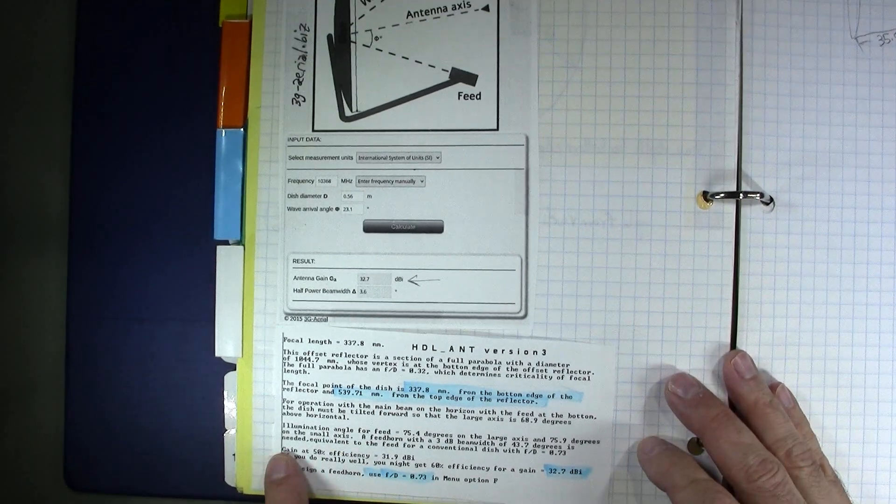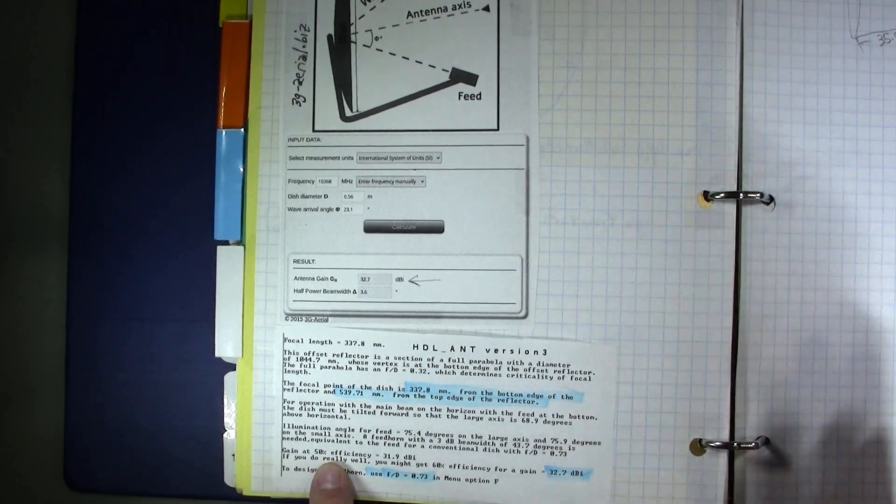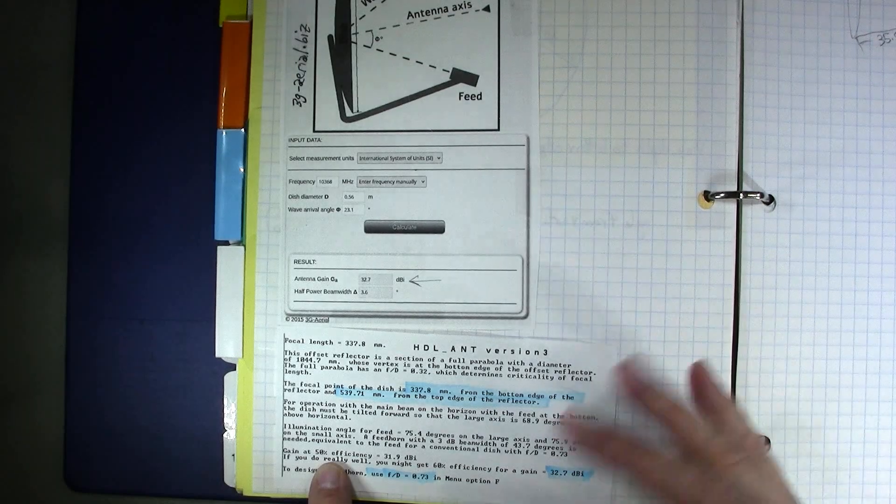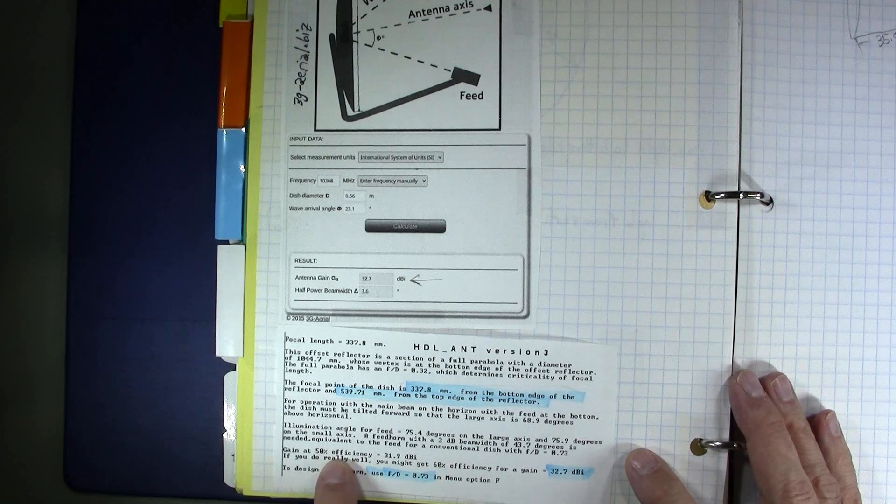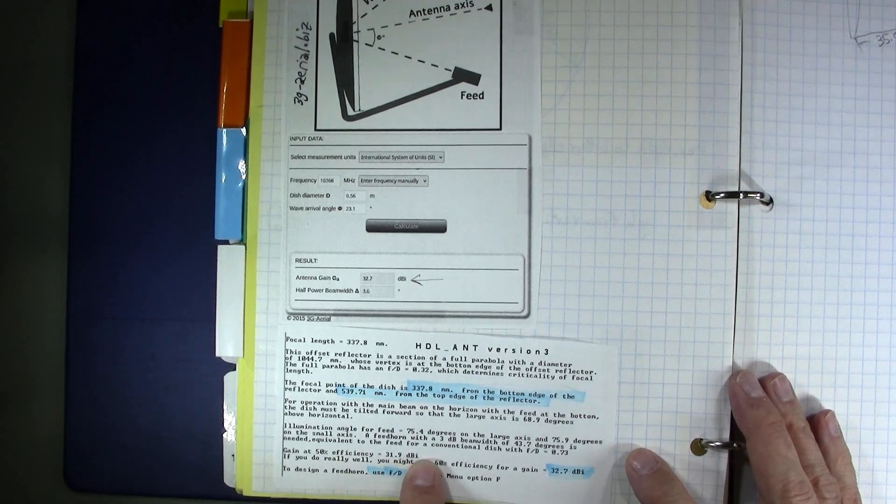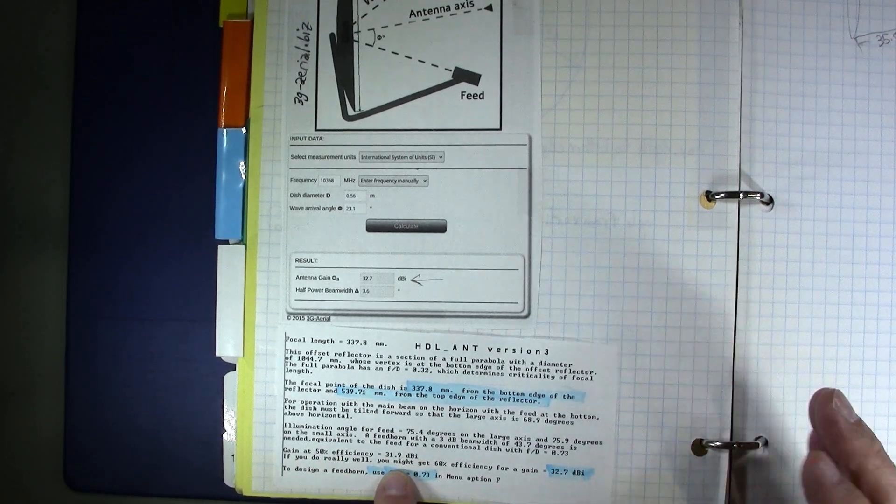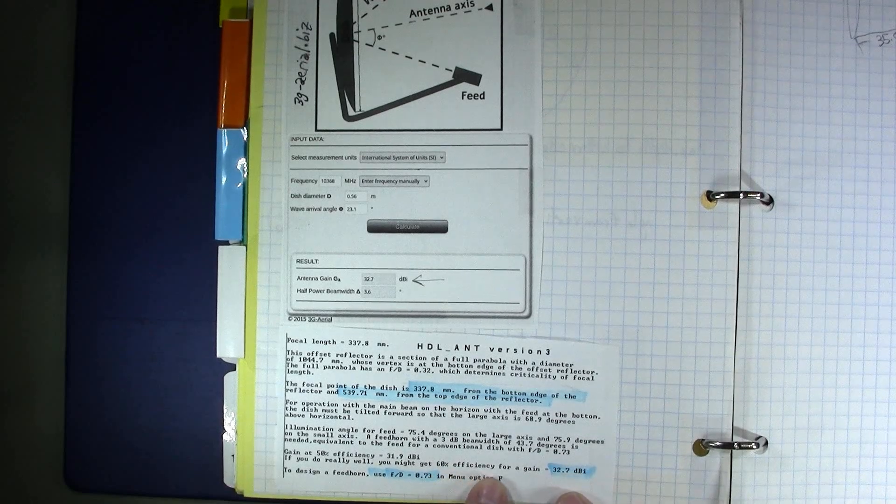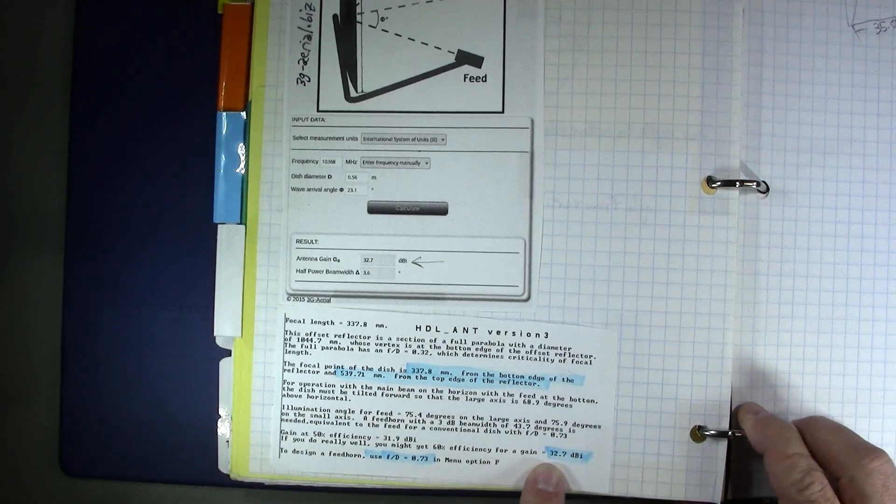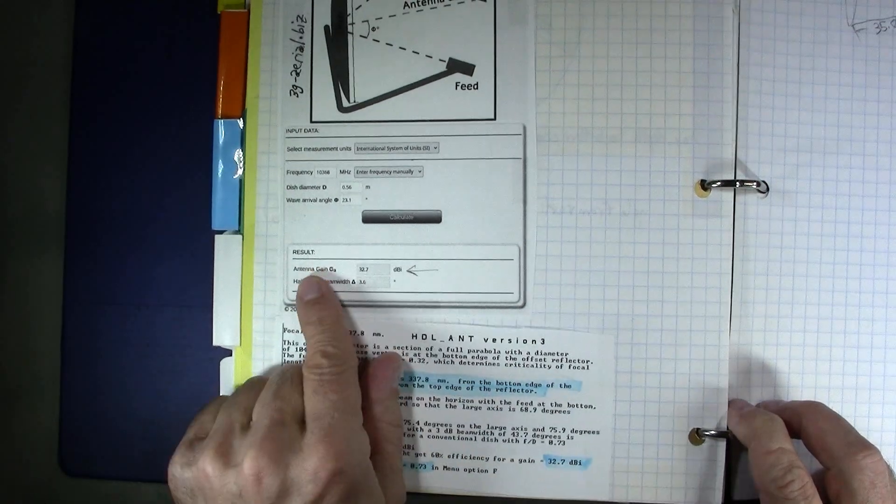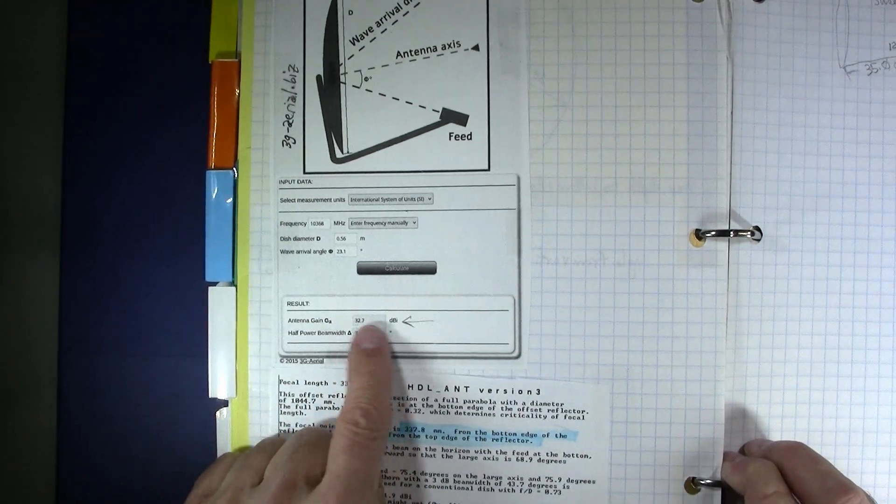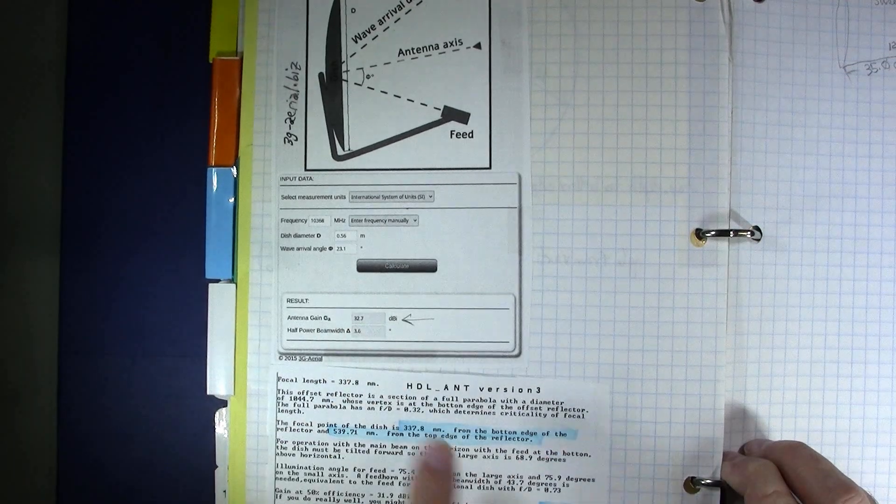It also tells us that the gain for a 50 percent efficiency, so illumination of the dish, which is not very high, 50 percent, the gain is almost 32 dBi. But if you push your efficiency to 60 percent, you get a gain of 32.7 dBi, which fits what we have here in the calculation, 32.7. Same thing.